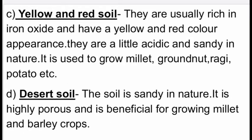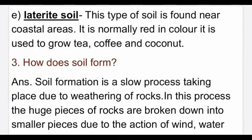Third one: yellow and red soil. They are usually rich in iron oxide and have a yellow and red color appearance. They are a little acidic and sandy in nature. It is used to grow millet, groundnut, ragi, potato, etc. Fourth one: desert soil. The soil is sandy in nature. It is highly porous and is beneficial for growing millet and barley crops. Fifth and the last point: laterite soil. This type of soil is found near coastal areas. It is normally red in color. It is used to grow tea, coffee and coconut.